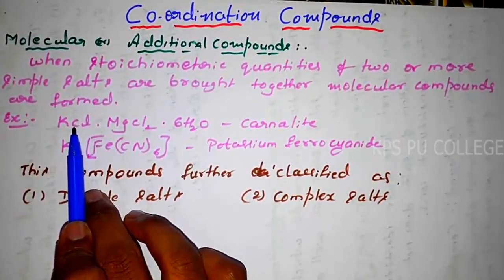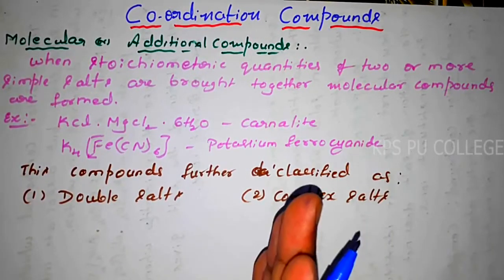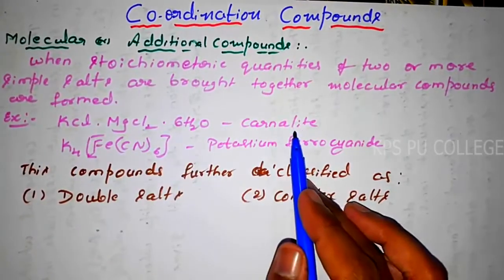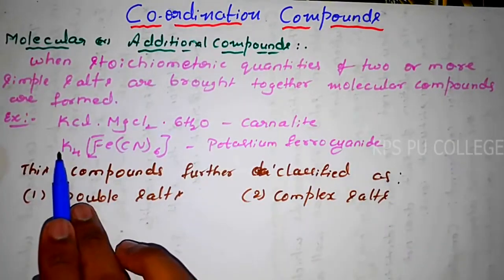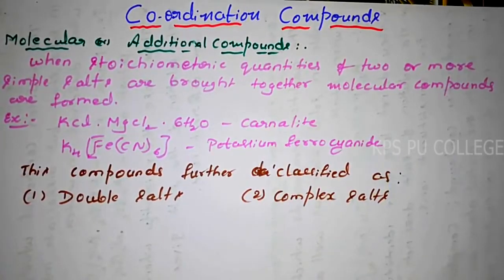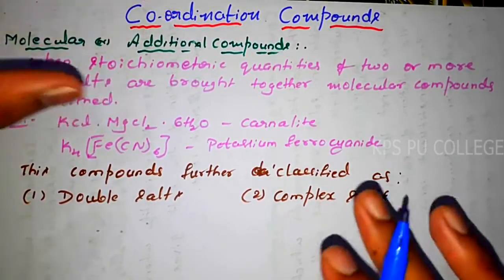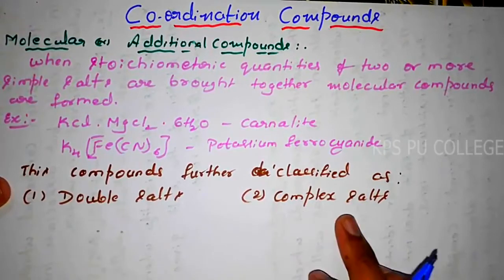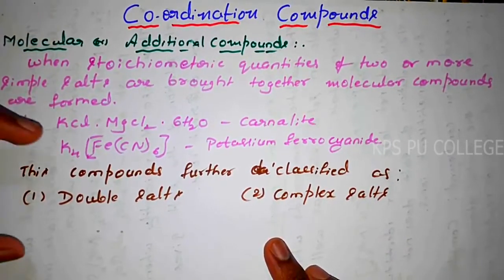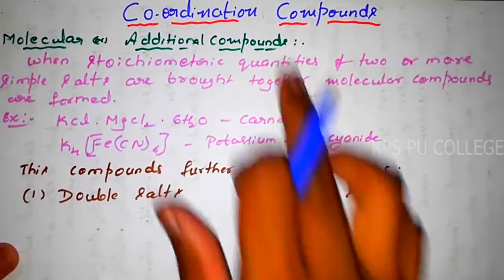Potassium chloride is a simple salt, magnesium chloride is a simple salt. When these simple salts are brought together they form a molecular compound. Under molecular compounds we have two types: double salt and complex salt, which is the coordination compound.